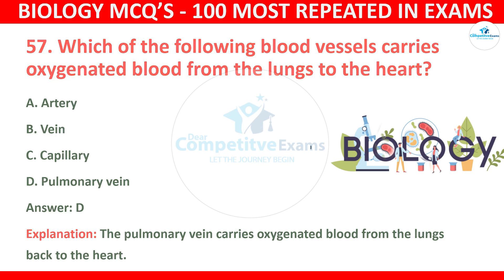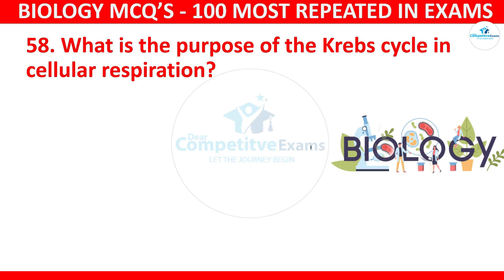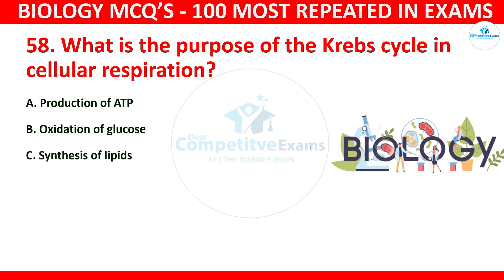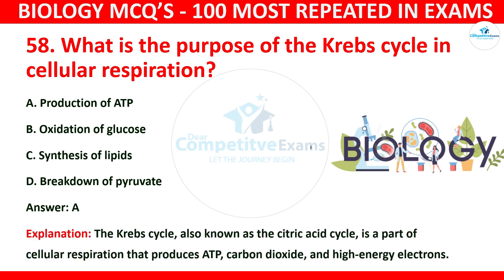Question number 58: What is the purpose of the Krebs cycle in cellular respiration? The options are production of ATP, oxidation of glucose, synthesis of lipids, or breakdown of pyruvate. The correct answer is A: production of ATP. The Krebs cycle, also known as the citric acid cycle, is a part of cellular respiration that produces ATP, carbon dioxide, and high energy electrons.